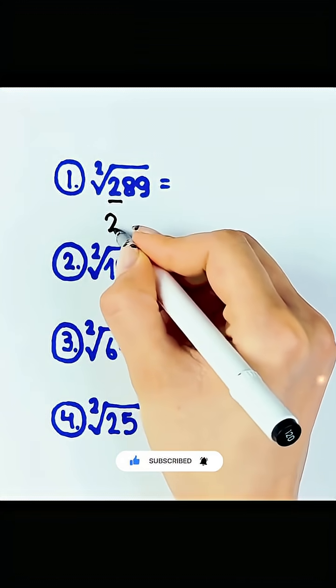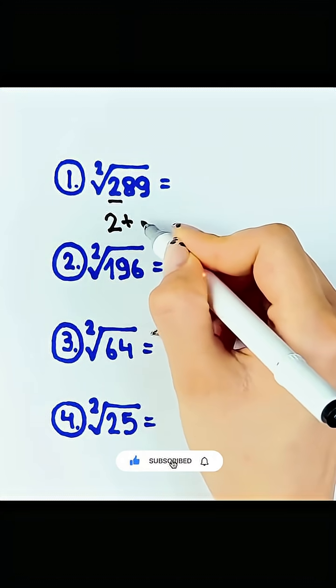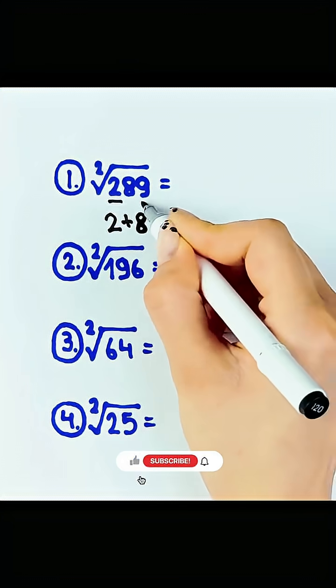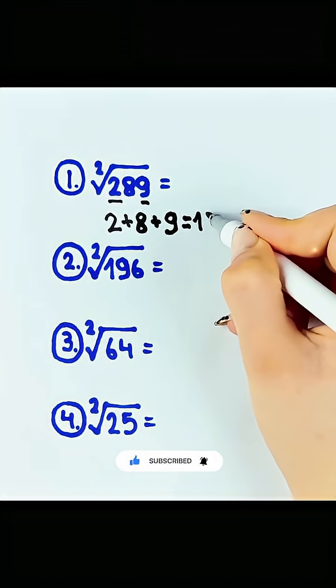Here's a fast calculation square root trick you have to try. First, take the numbers 2, 8, and 9. When you add them together, you get 19.